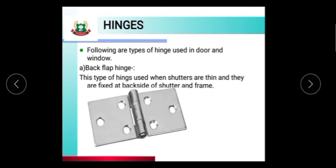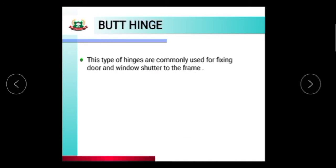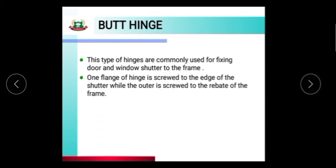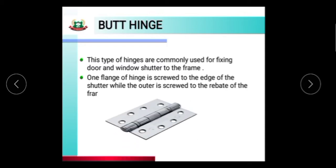See the image of the back flap hinge — this type of hinge is provided in the shutter and frame. Next is the butt hinge. This type of hinge is commonly used for fixing door and window shutters to the frame. One flange of the hinge is screwed to the edge of the shutter while the other is screwed to the rebate of the frame. See the image of the butt hinge. This hinge is also used for fixing doors and windows to the frame.